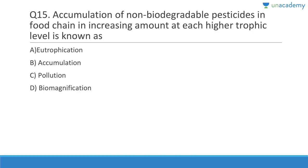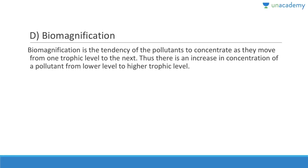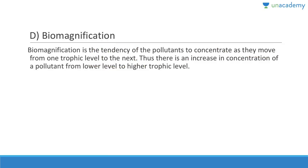Question fifteen: Accumulation of non-biodegradable pesticides in a food chain in increasing amounts at each higher trophic level is known as biomagnification. This especially affects bird eggshells — particularly of eagles — making them very brittle because of DDT biomagnification. Biomagnification is the tendency of pollutants to concentrate as they move from one trophic level to the next, increasing in concentration from lower to higher trophic levels.